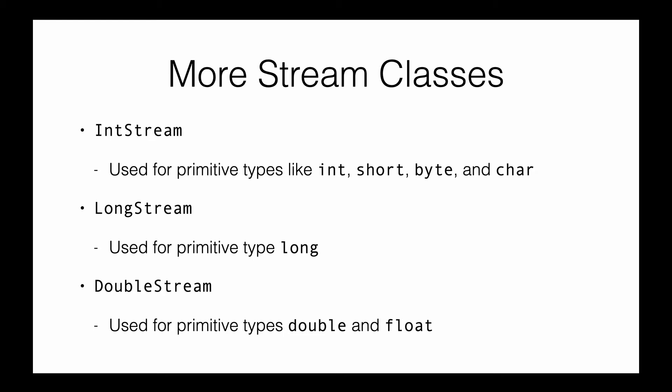There are three different primitive stream classes. We have IntStream, which is used to store primitive int, short, byte, or character. The second type is LongStream, used to store a long primitive type. And we have DoubleStream, used to store double or floating point numbers. A very obvious question is: if we have a generic stream class that can store integer, long, and double, then why do we need a specific stream class for int, long, and doubles?